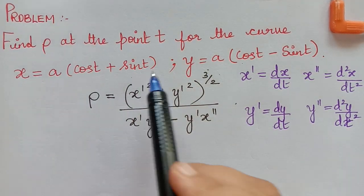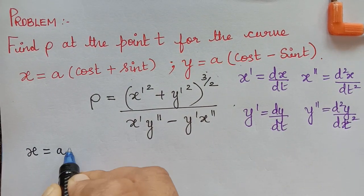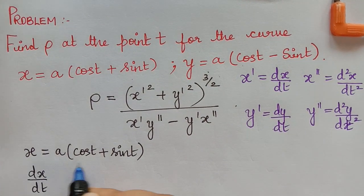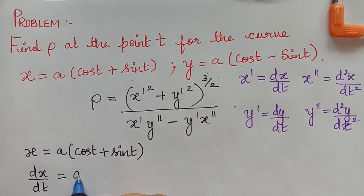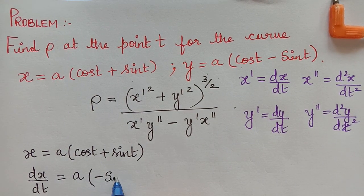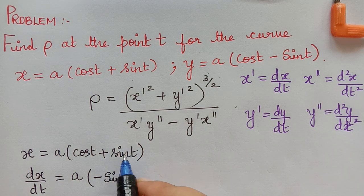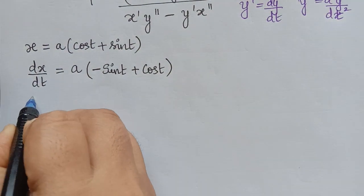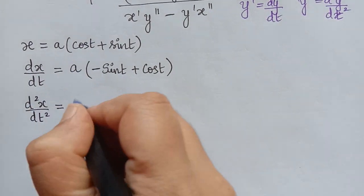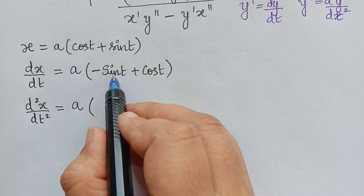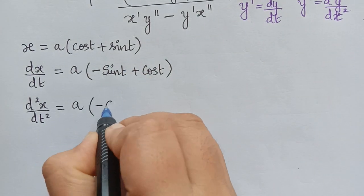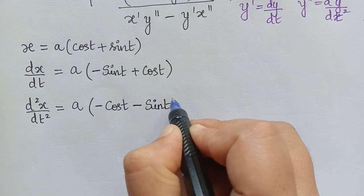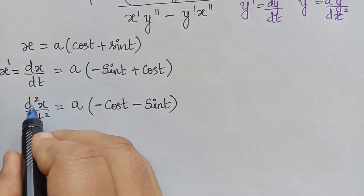First, we take x = a(cos t + t·sin t). We differentiate with respect to t to get dx/dt: the derivative of cos t is -sin t, so we get a(-sin t + sin t + t·cos t), which simplifies. Then differentiating again to get d²x/dt², which equals a multiplied with the derivative of that expression, giving us x'' = a(cos t - sin t) after simplification.